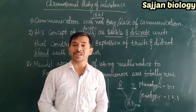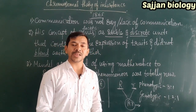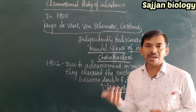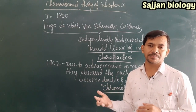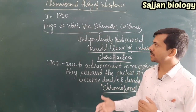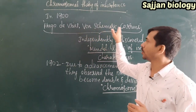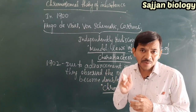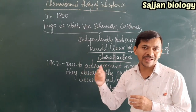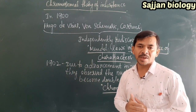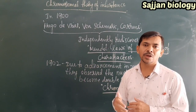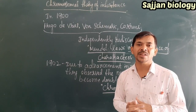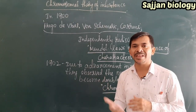The rediscovery of Mendel's laws of inheritance was started by three scientists: Hugo de Vries, Tschermak, and Correns. These three scientists together began the rediscovery of all Mendelian laws of inheritance of characters. However, due to the non-advancement in microscopy, they could not identify the particular structure responsible for the inheritance of characteristics.